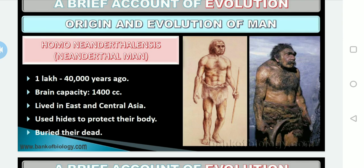Neanderthal man used hide to protect their body and buried their dead ones — showing early signs of civilization during the process of evolution. Brain capacity was 1400 cc; they lived in east and central Asia. These are the important characteristic features of Homo neanderthalensis, commonly known as Neanderthal man.